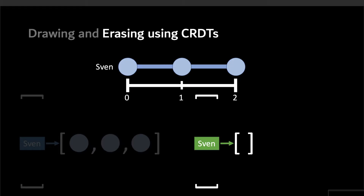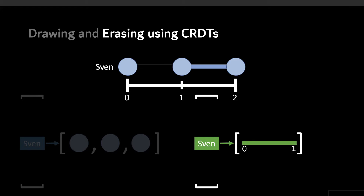In order to support continuous and smooth erasing, we think about a stroke as a number line, where the integers on that line are the indices of the original points. If we start erasing from the beginning, we have an interval that goes from 0 to, say, 0.5 — halfway to the first point. If we continue erasing, that interval just grows. If we erase a little bit from the other end, we just add a separate interval. And finally, once we've erased the entire stroke, all those intervals collapse into just one huge interval that covers the entire stroke.